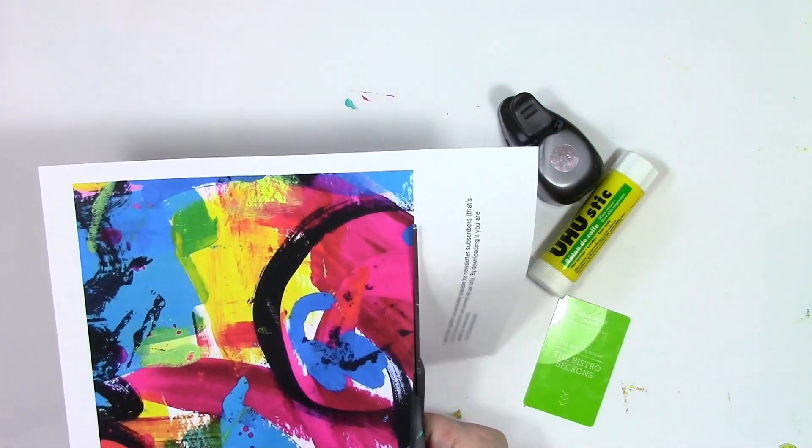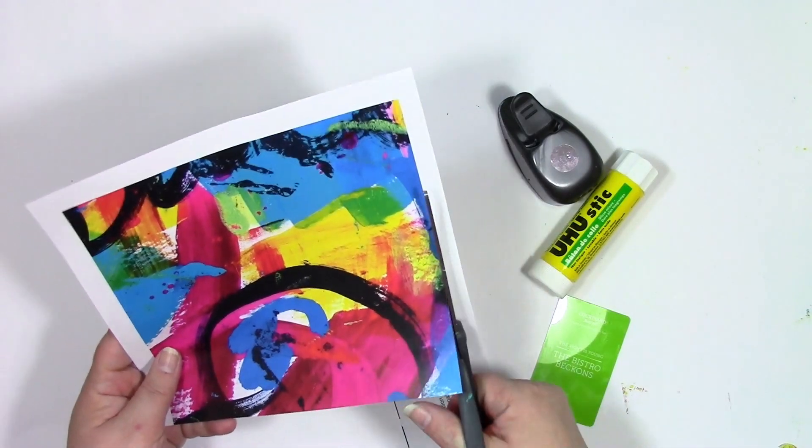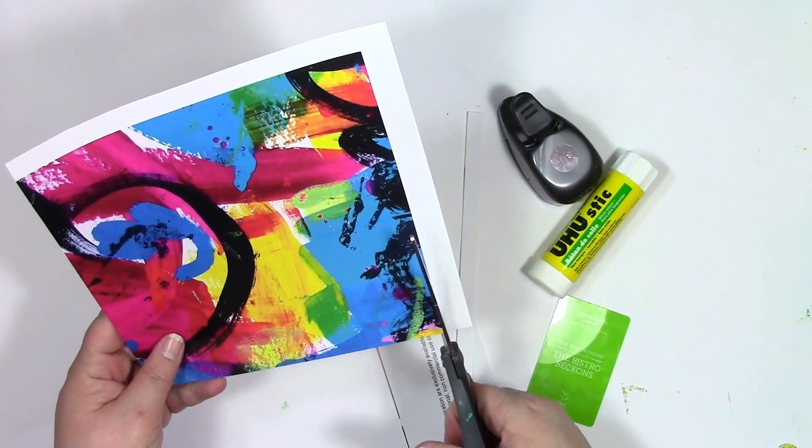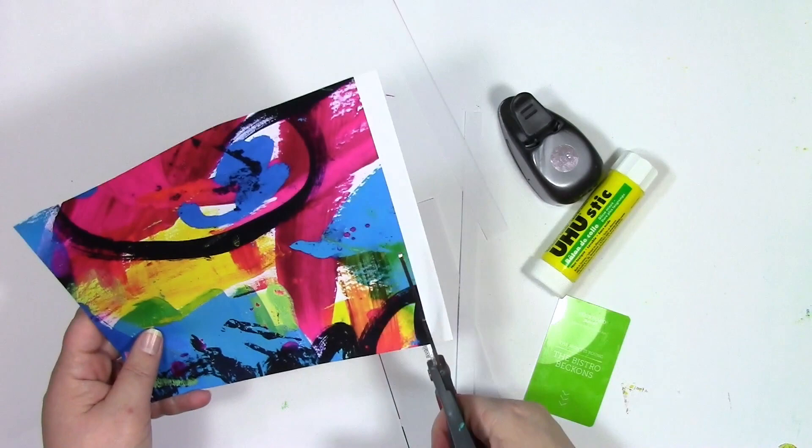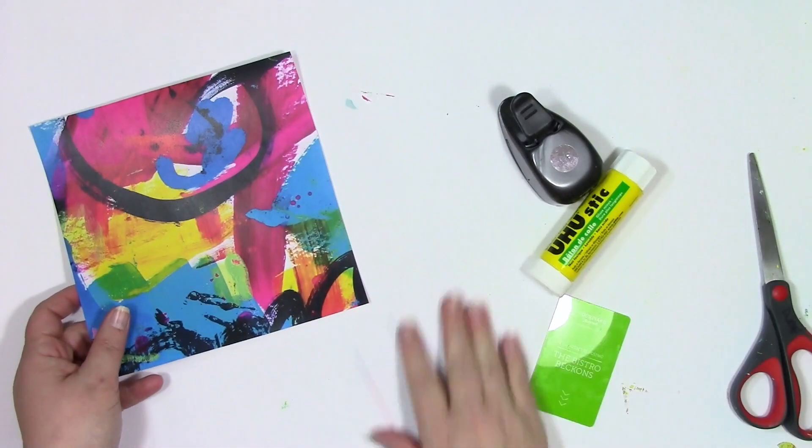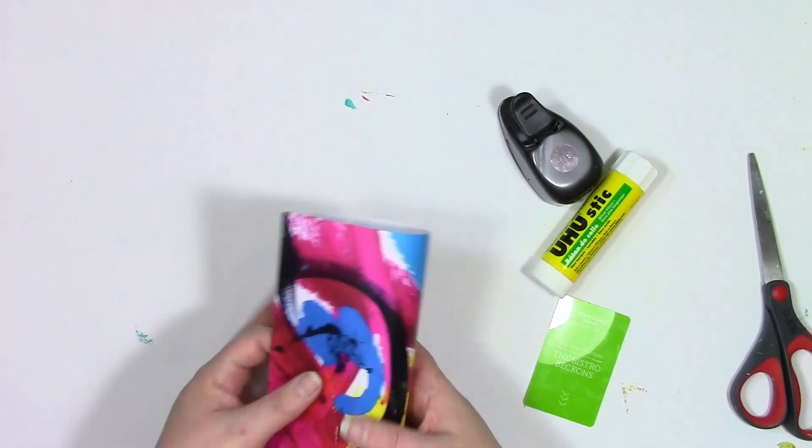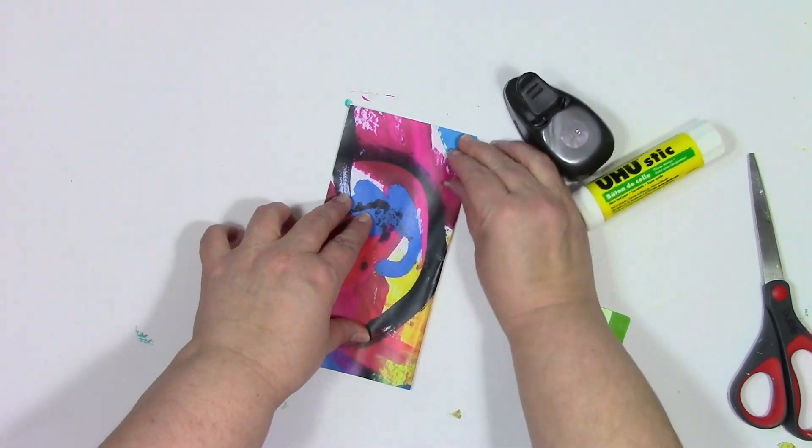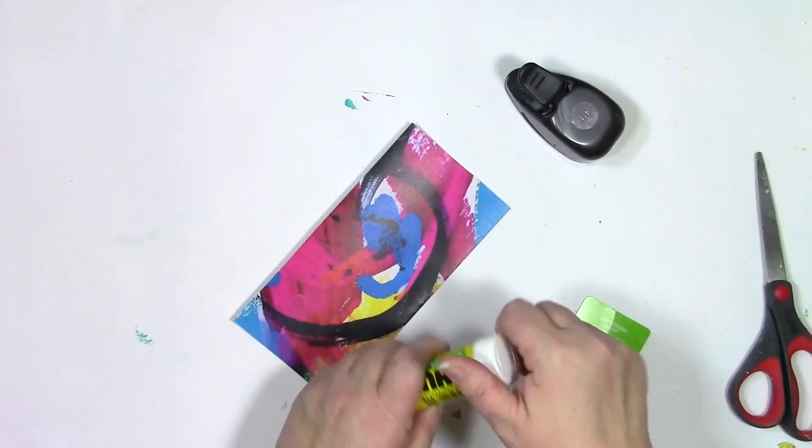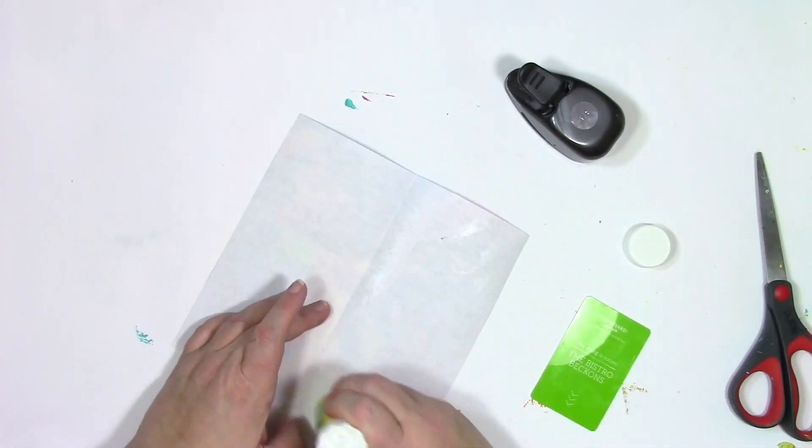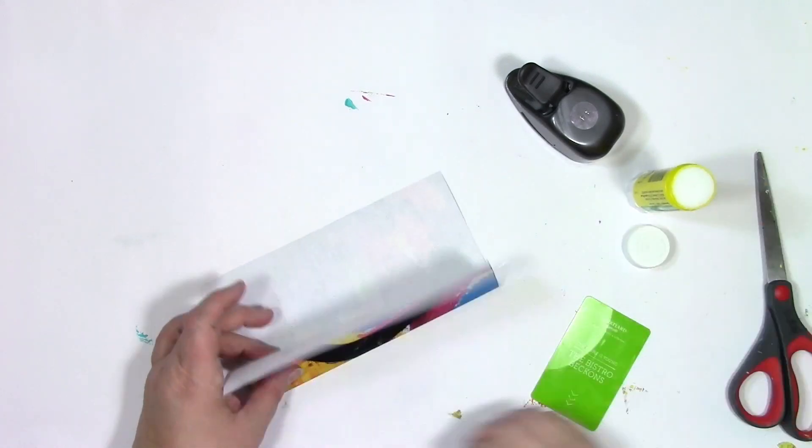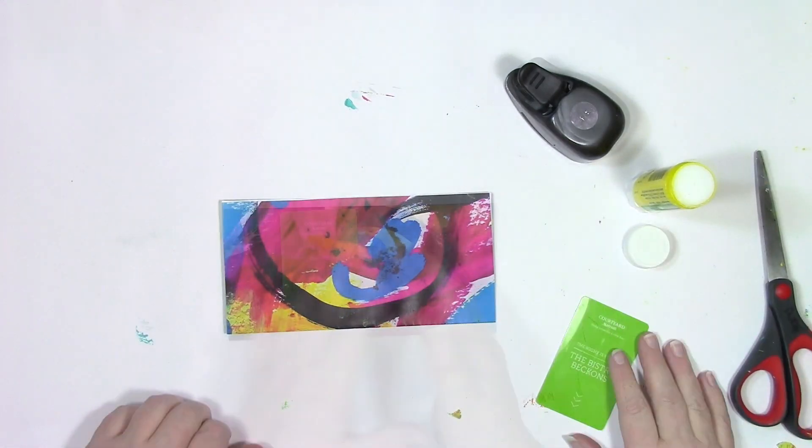I'm going to start by cutting out my spark, and it's approximately seven and a half inches. Nothing about this is precise, so something about this size will work. I'm just using regular old copy paper that I printed off on my computer. I'm going to fold it in half, and then I'm going to use a glue stick and glue the two sides together. So now my paper has magically become double-sided.